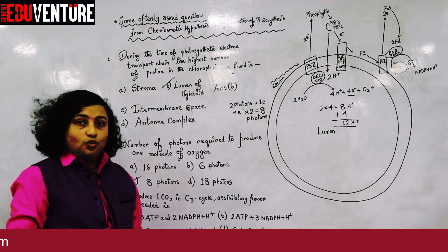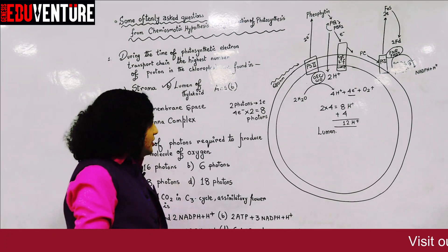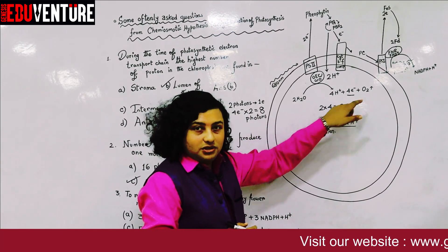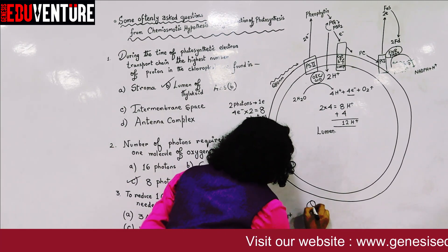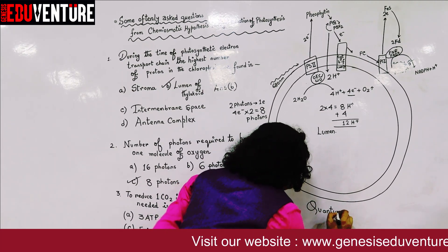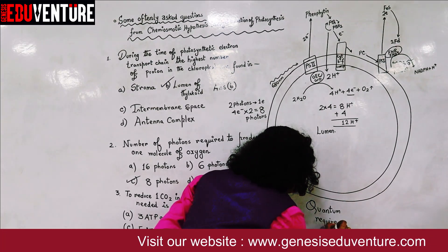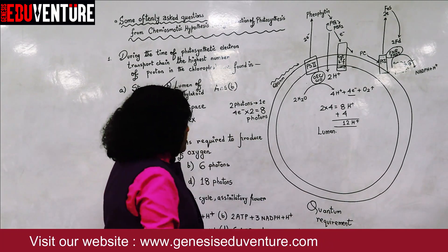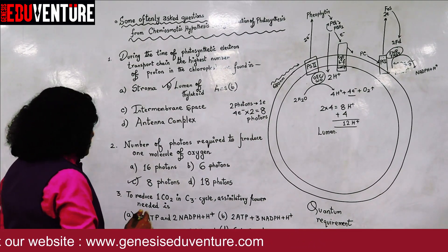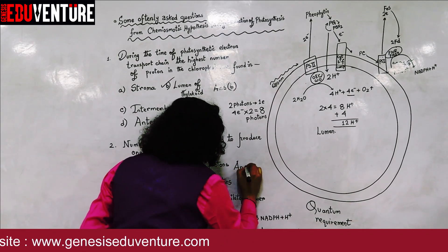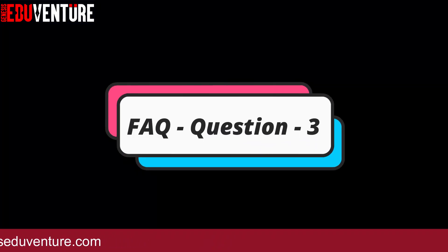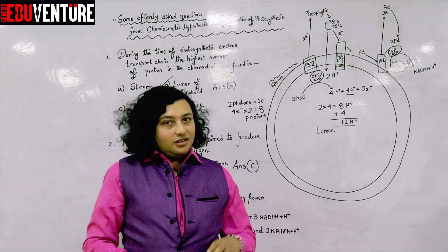This is also known as quantum requirement — the number of photons required to release one molecule of oxygen. The correct answer for this question is option C: 8 photons. Moving on to question 3: to reduce one molecule of carbon dioxide in the C3 cycle, the assimilatory power needed is — we know assimilatory power is NADPH and ATP.